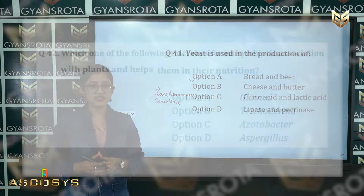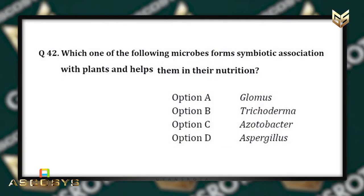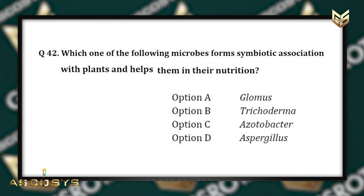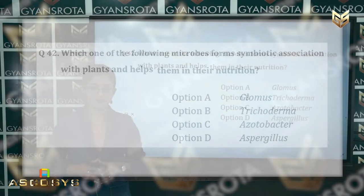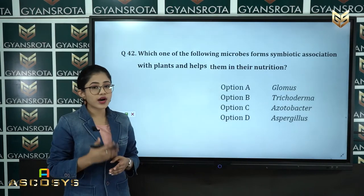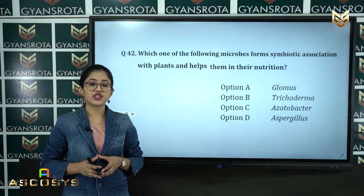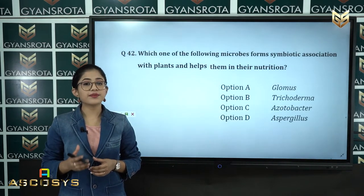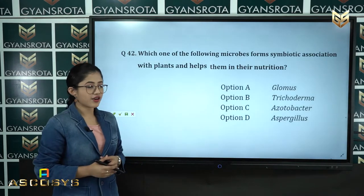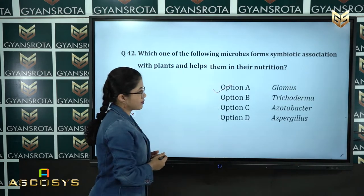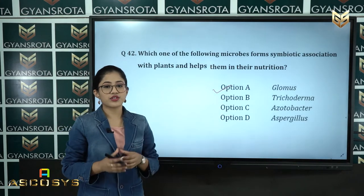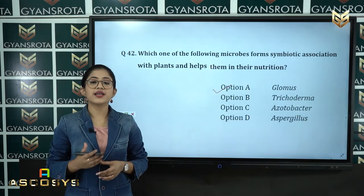Question 42: Which one of the following microbes forms a symbiotic association with plants and helps them in their nutritional purpose? Option A: Glomus, option B: Trichoderma, option C: Azotobacter, option D: Aspergillus. The correct answer is option A, Glomus, which forms a symbiotic association with plants and helps them in nutrition.